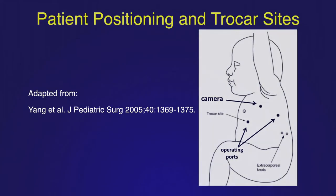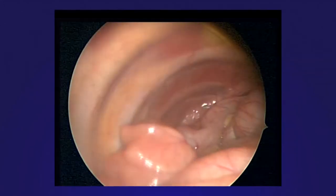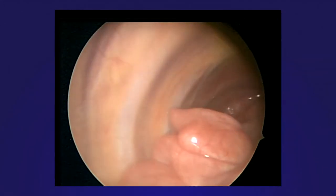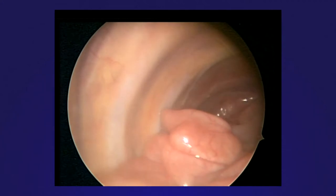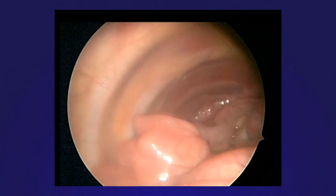The positioning and port sites for the procedure are shown here. An insufflation pressure of 6 mmHg and a flow rate of 2 liters per minute are used. Herniation of the small and large bowel can be seen.